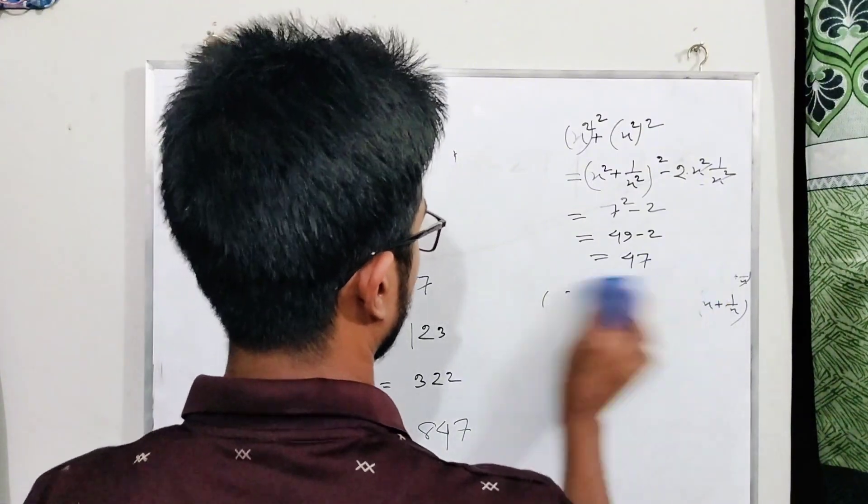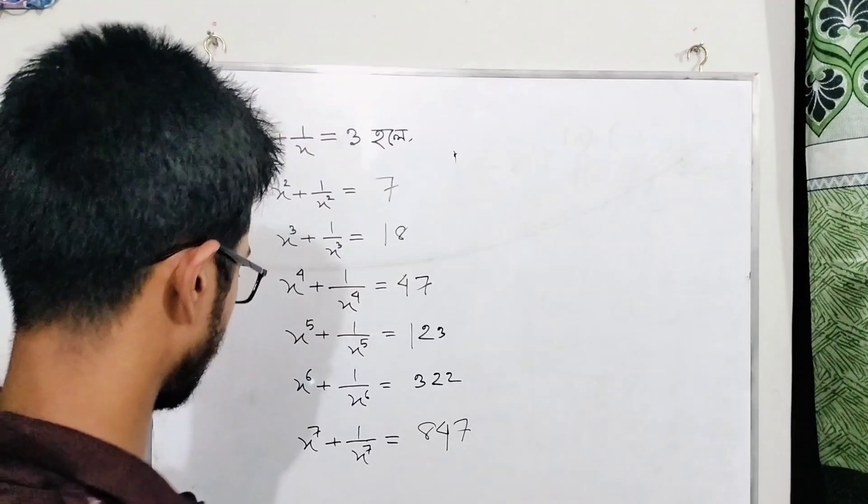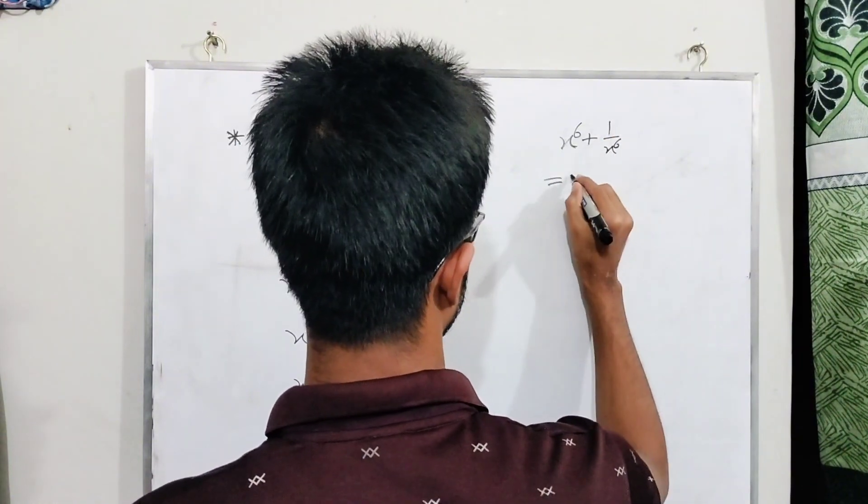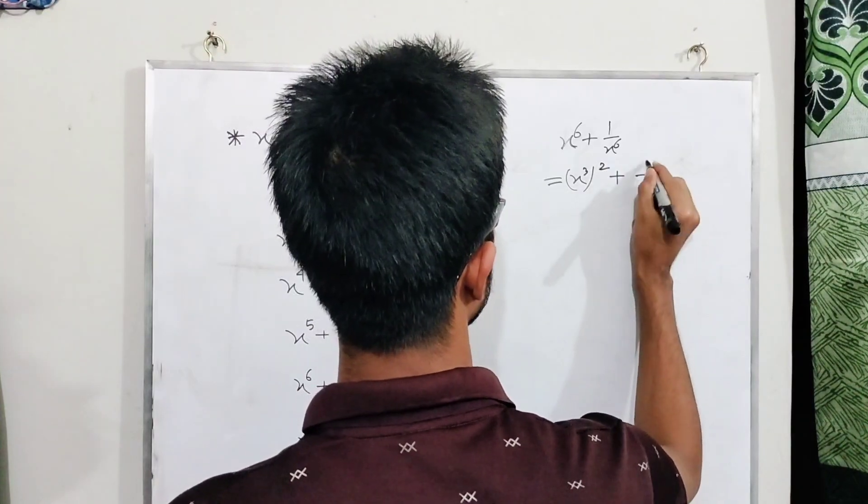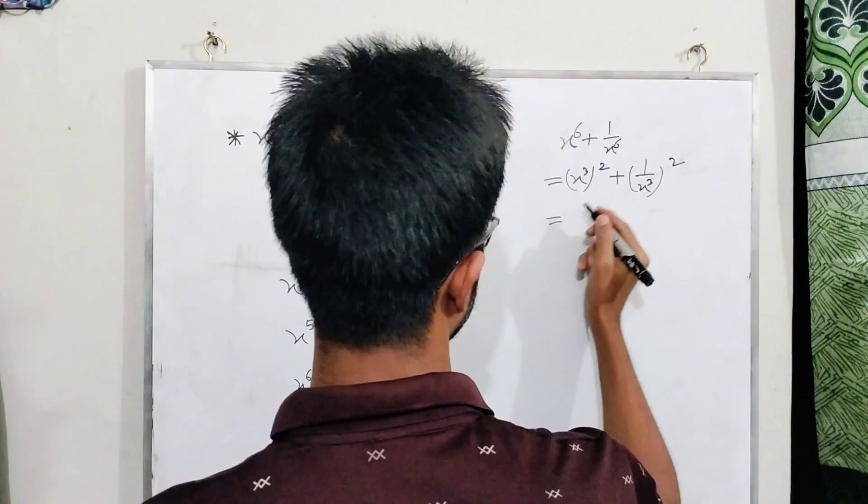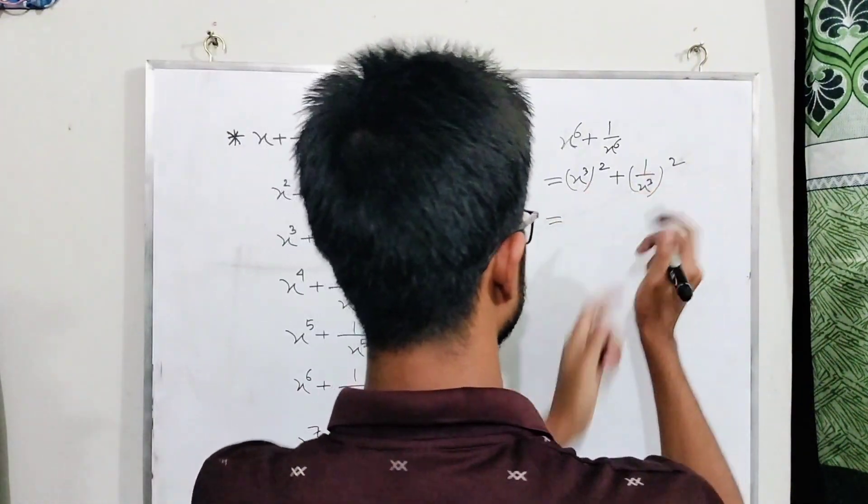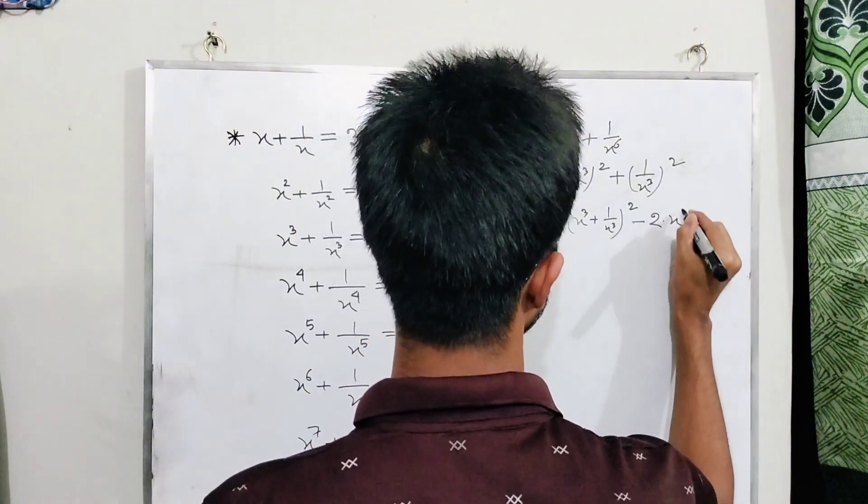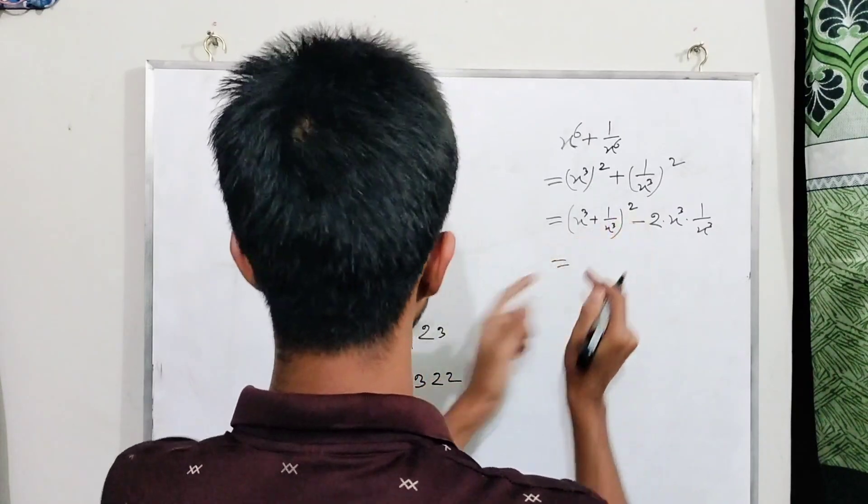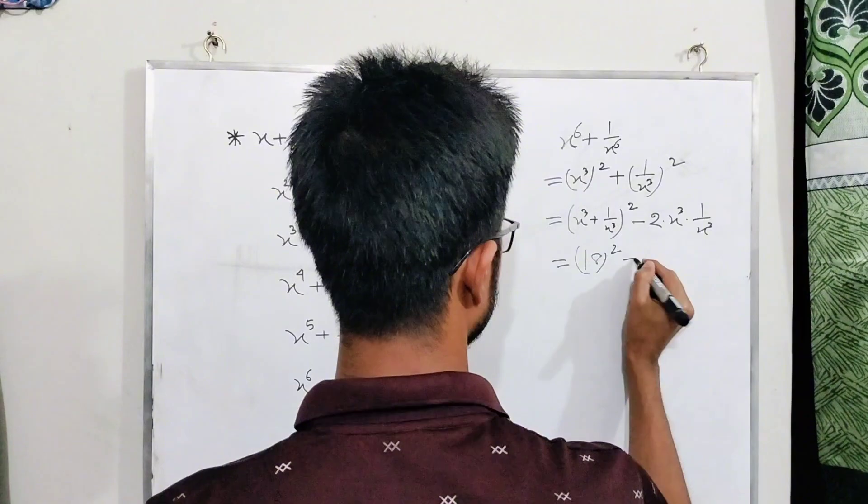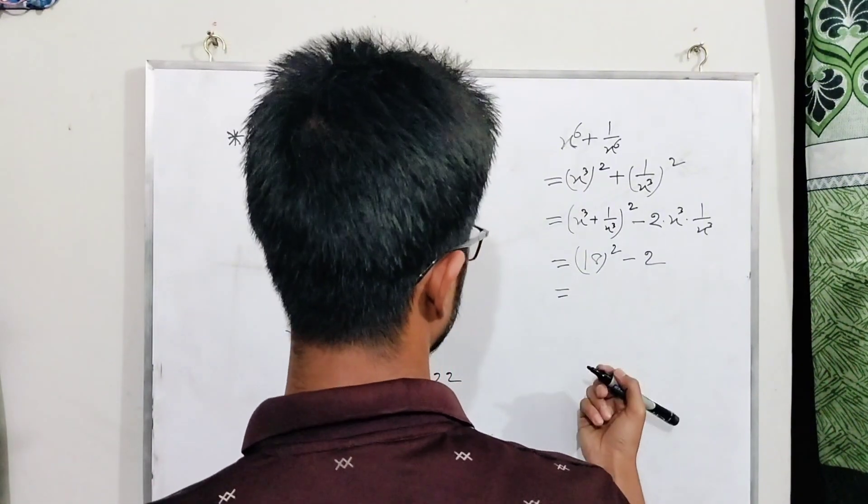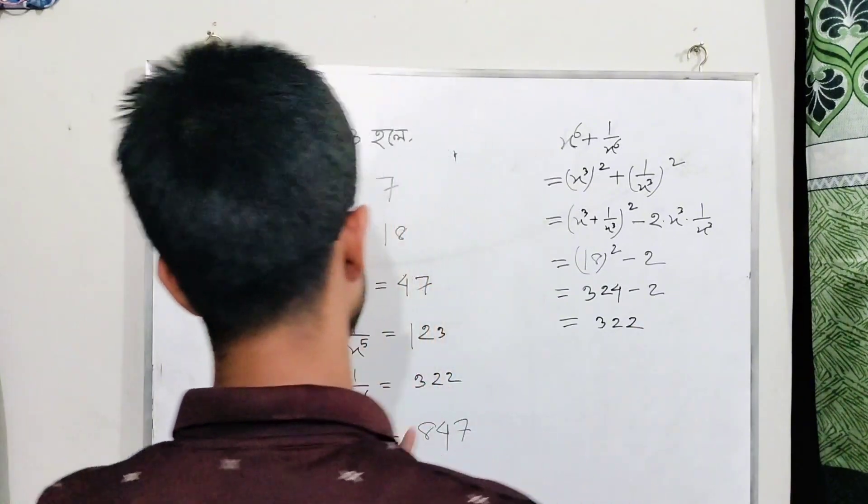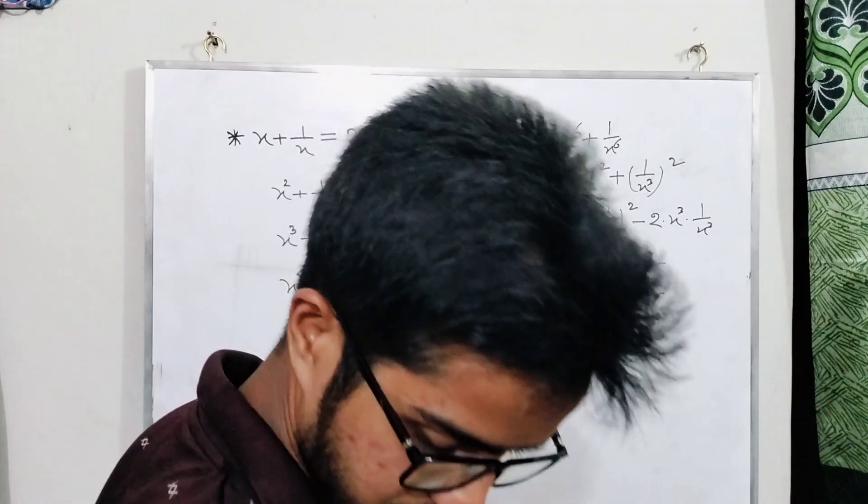For x to the power six plus one by x to the power six, we use (x cube plus one by x cube) whole square minus two. Using the formula (a plus b) square minus twice ab, and since x cube plus one by x cube equals eighteen, we have eighteen squared minus two, which equals three hundred twenty-two.